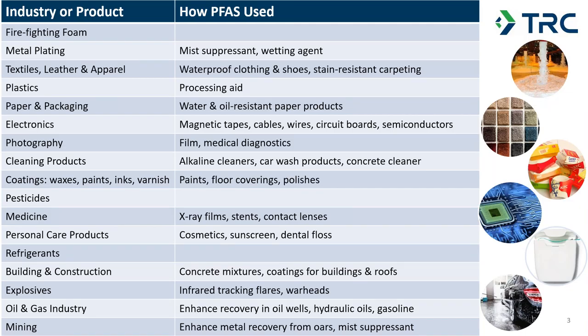Understanding the potential sources of PFAS is important for forensics evaluations and site characterizations. There are many different industries or products where PFAS are used, and this information will be useful when considering what types of sites might have PFAS contamination or from where the contamination might originate. Forensics is not just about chemistry, but also about looking into operational history and potential nearby sites or sources that may be affecting your site.